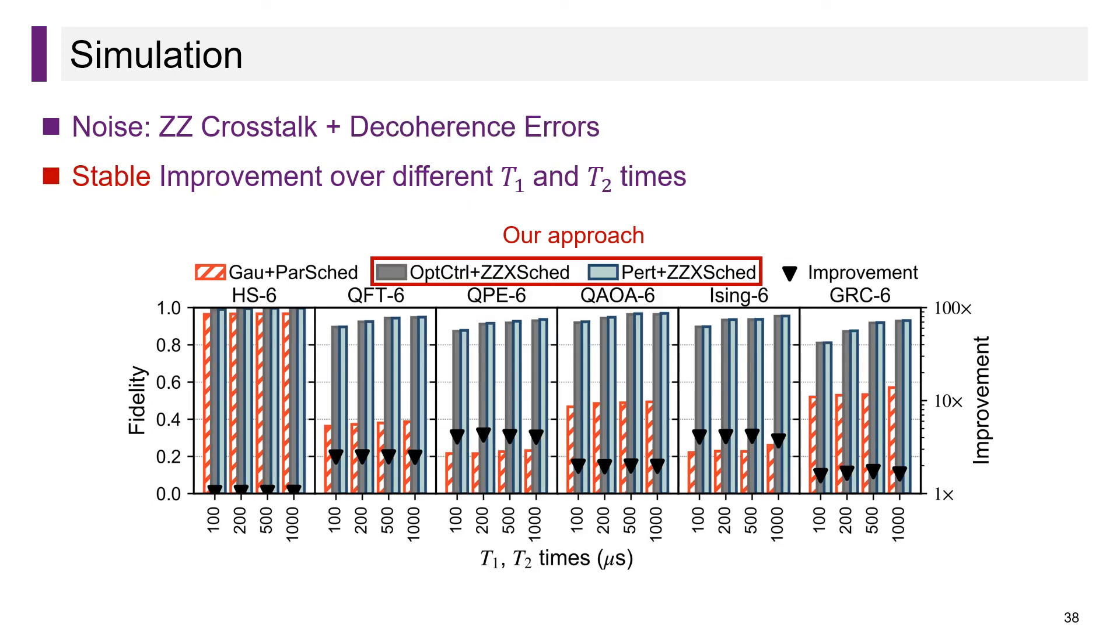Then we added decoherence errors into simulations. We performed 7 groups of simulations. In each group, we used the same application but with different T1 and T2 times of qubits. Smaller T1 and T2 times mean more severe decoherence. The results show that decoherence has limited influence on the effectiveness of our approach.